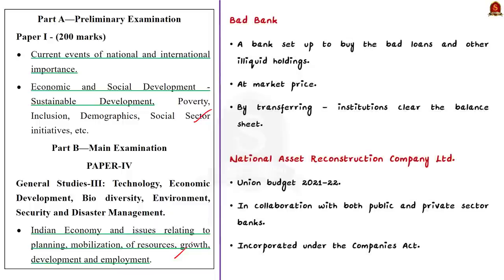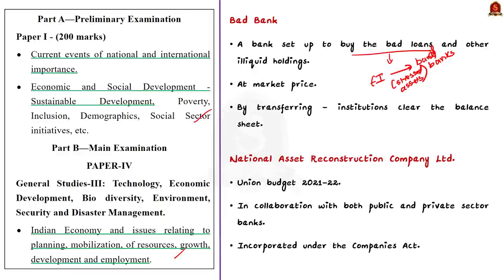A bad bank is a bank set up to buy the bad loans of another financial institution. The entity holding significant non-performing assets will sell these holdings to the bad bank at a set market price. By transferring such assets to the bad bank, the original institution may clear its balance sheet. This is exactly what banks are planning to do according to the article.